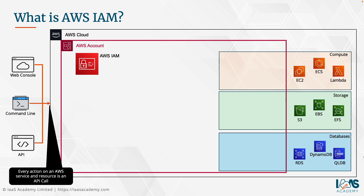Now when you first created your AWS account, you created something called a root user — the owner of the account. In order to set up this account, you provided an email address and a password of your choice, and AWS provisioned an account for you with a root user, with credentials in the form of an email address and password. This root user has full access to your AWS account — complete access. This root user is, in fact, the god of your AWS account and has the full keys to the kingdom. So this user can provision services, terminate services, and ultimately even close the account down.